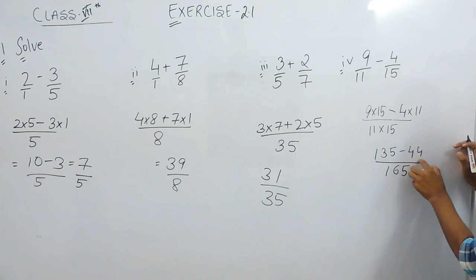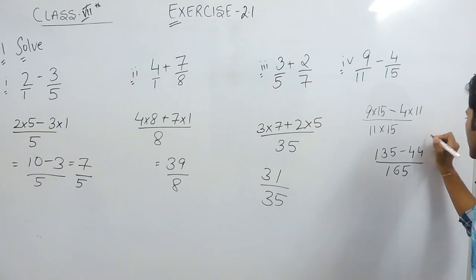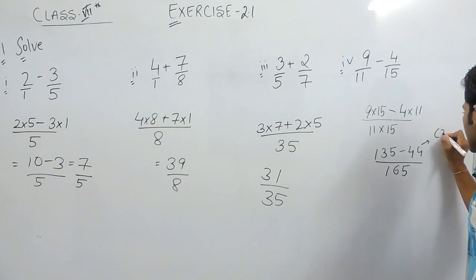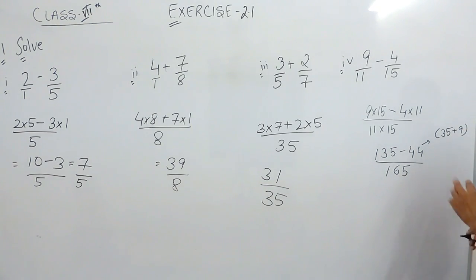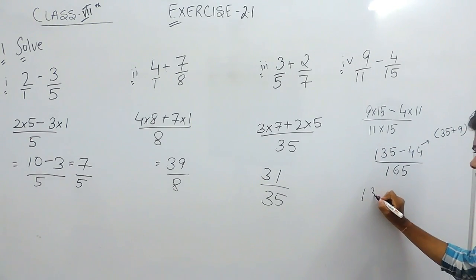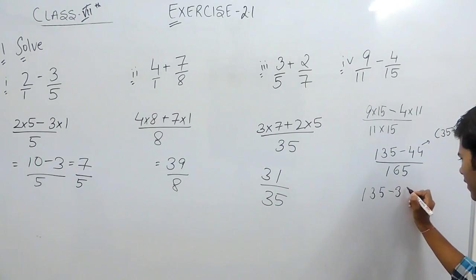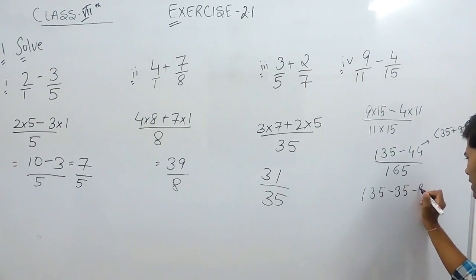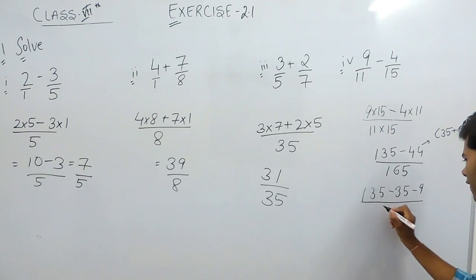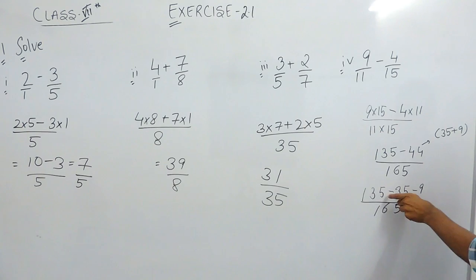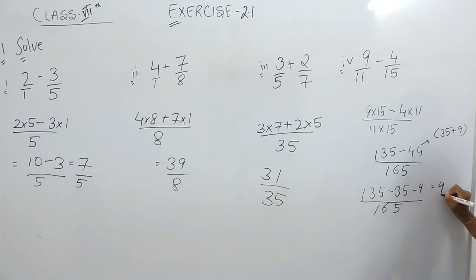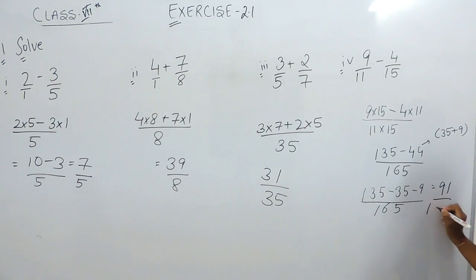Now if I subtract I can write this 44 as 35 plus 9. So we can write this like 135 minus 35 minus 9 divided with 165. Now 135 minus 35 is 100, and 100 minus 9 is 91 divided with 165.